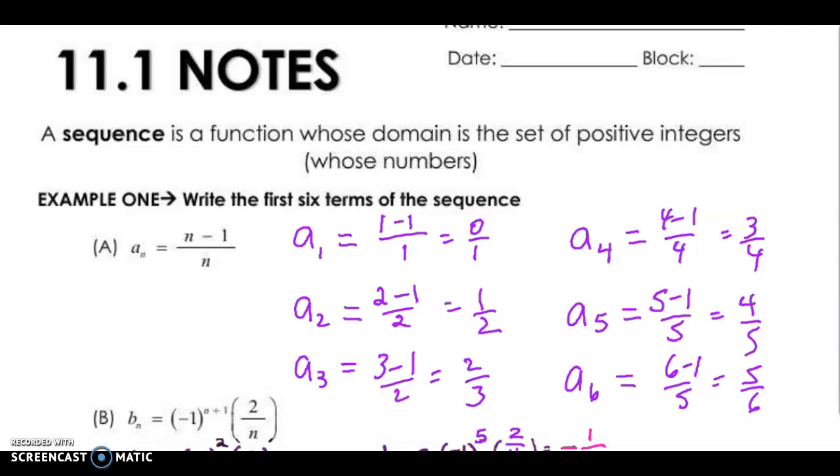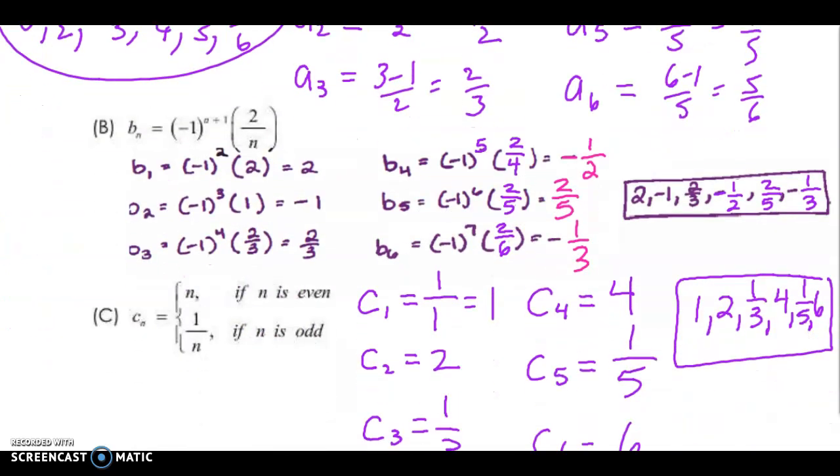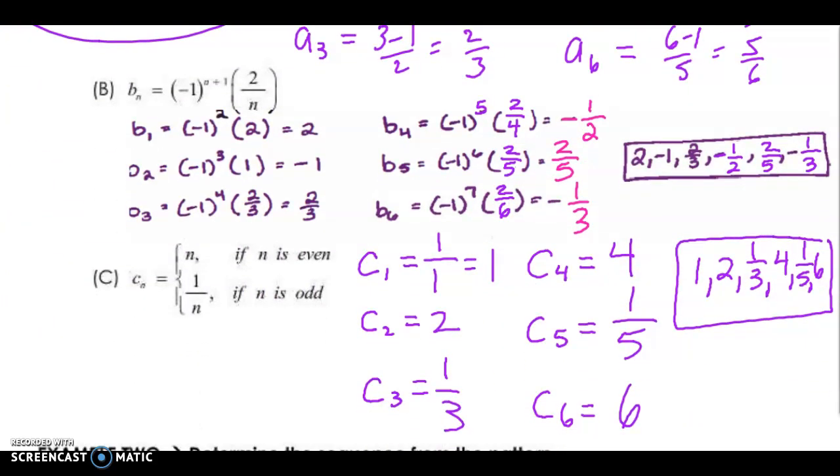They're asking to write the first six terms. So how they want the answer to be written is like this: 0, 1 half, 2 thirds, 3 fourths, 4 fifths, 5 sixths, like that. Easy peasy. Try the next one, the next two on your own. Press pause. Don't look at it and try them.